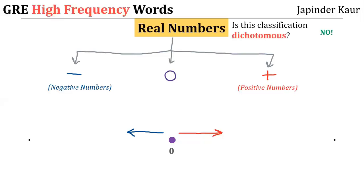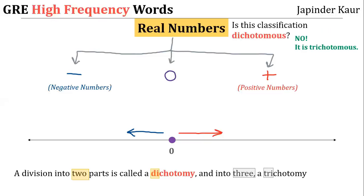Now tell me: if a division into two parts is called a dichotomy, what should a division into three parts be called? A trichotomy. So we say that the sign-based classification of real numbers is trichotomous.